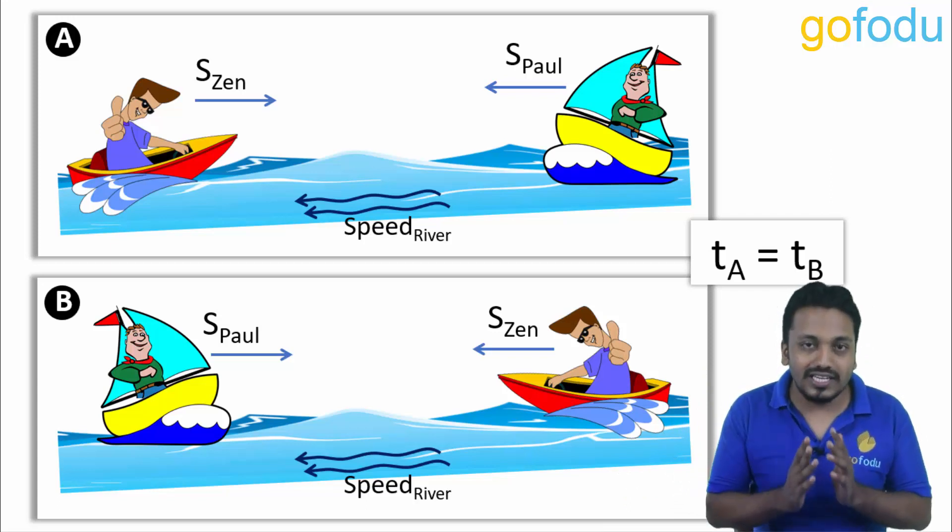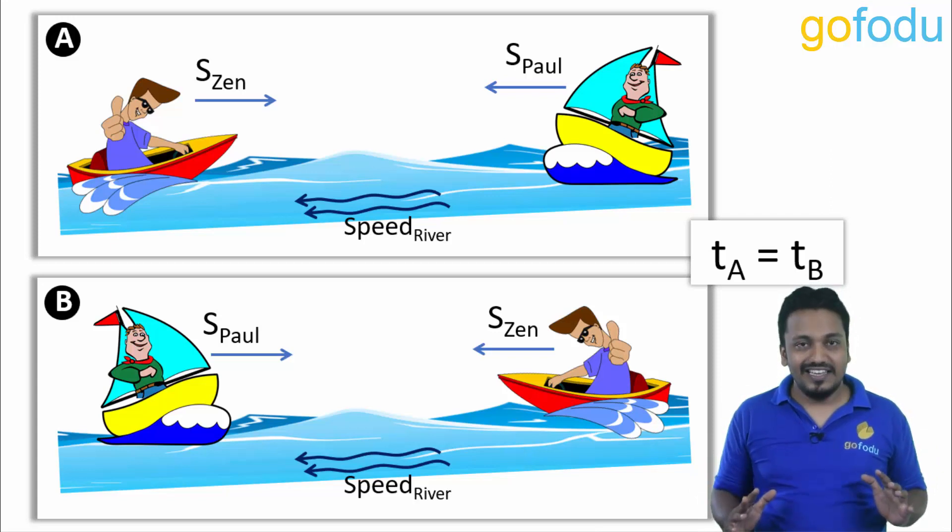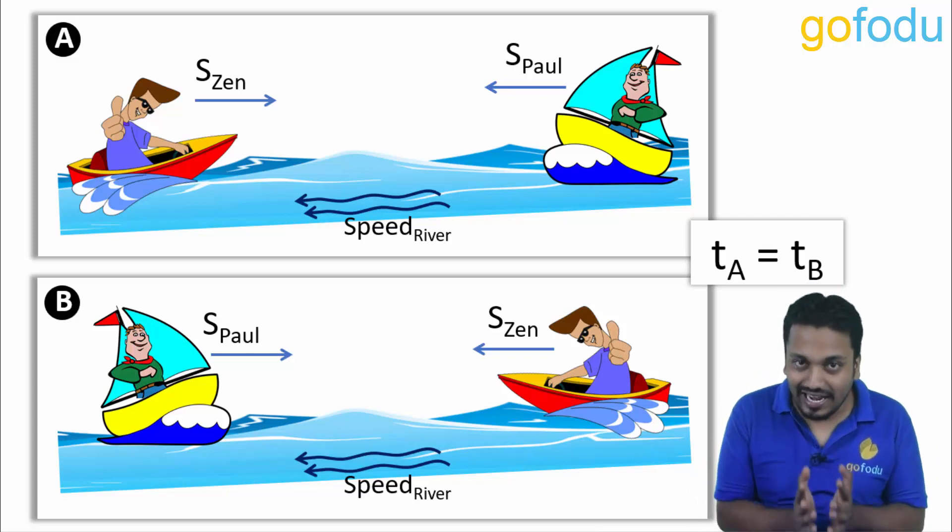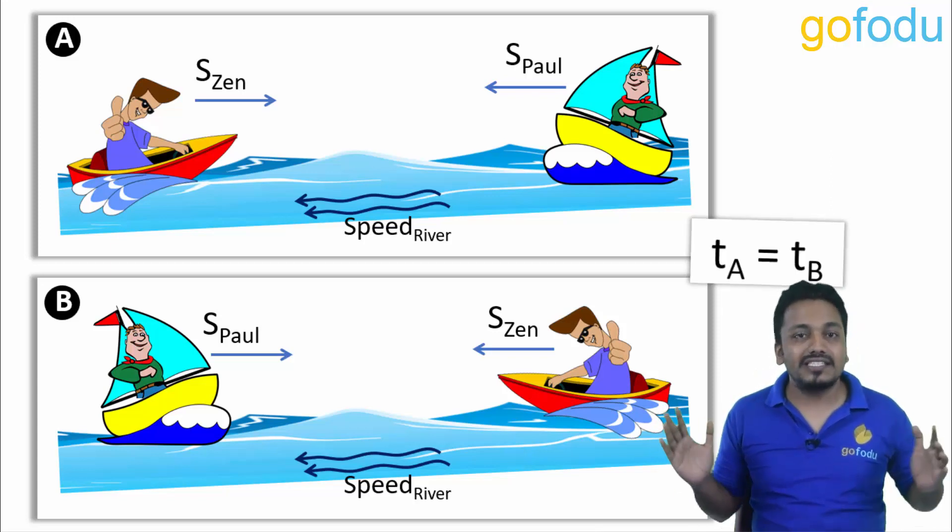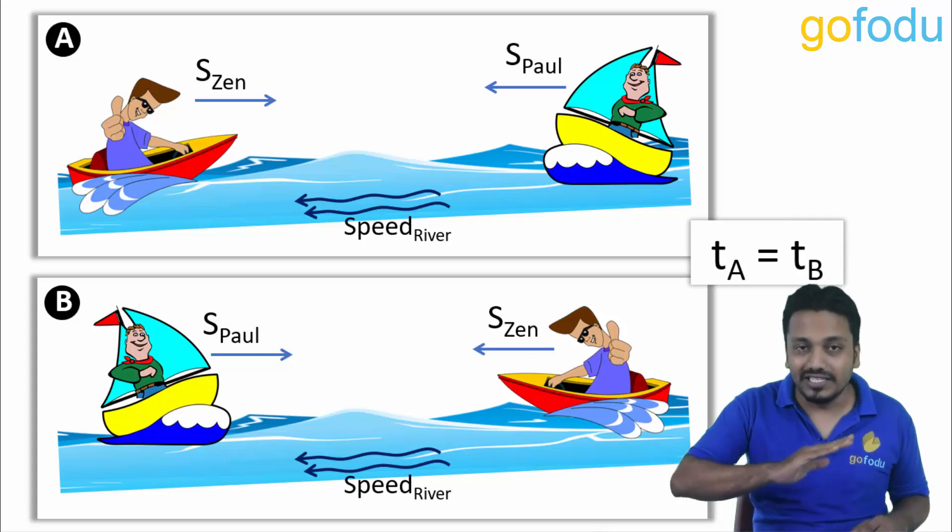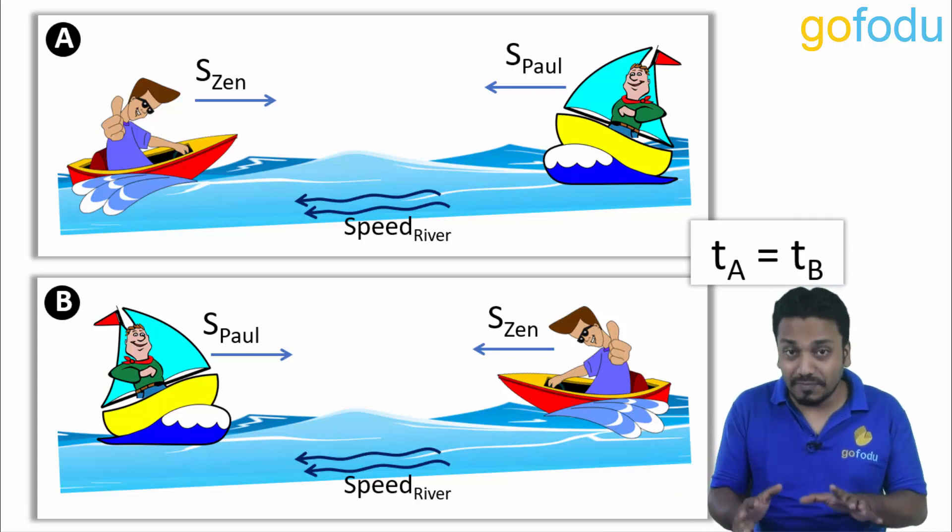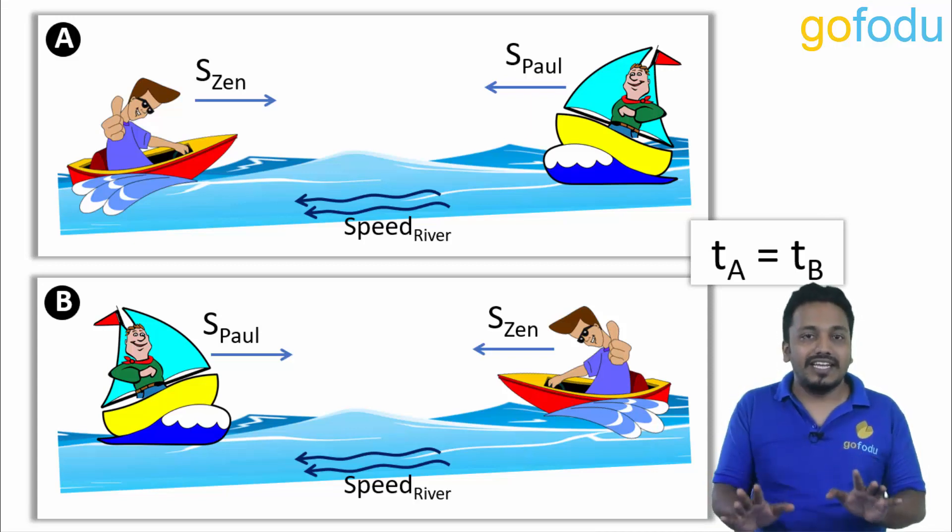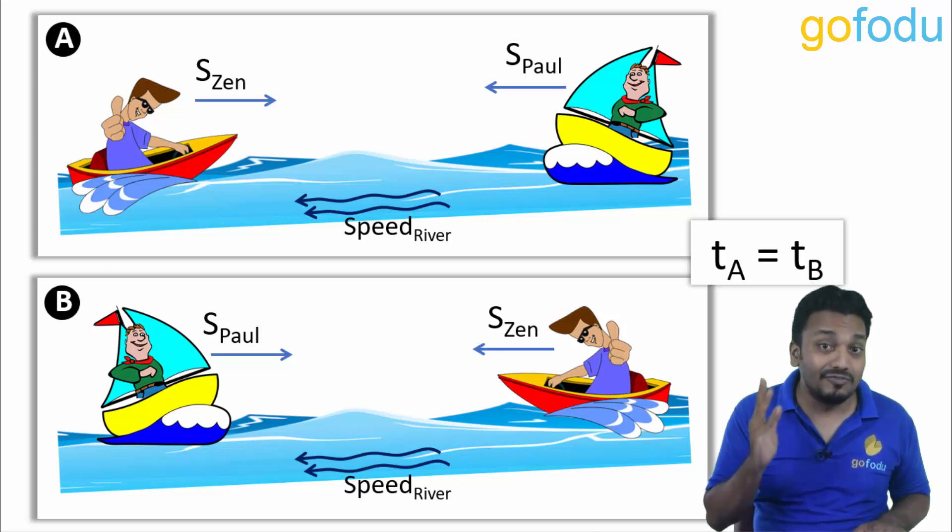My question is will the time they take to meet be same for both the cases? Will the time they take to meet be same irrespective of their individual speeds, irrespective of szen and spaul, whatever their values are? And if yes then why?